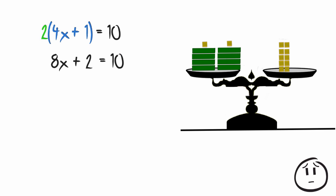So now we have a simpler equation. 8x plus 2 is 10. We've seen problems like that before. We need to get the x's on one side of the equation and the units on the other side.